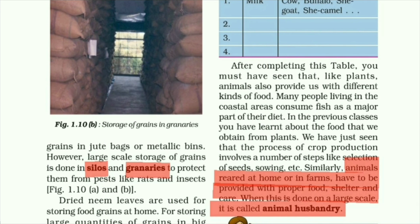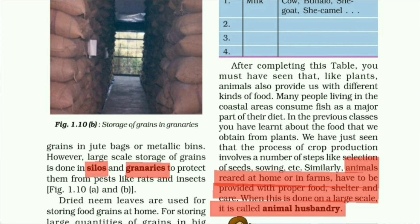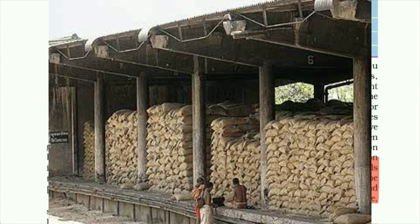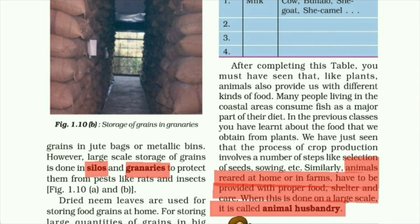However, large-scale storage of grains is done in silos and granaries. These are large godown-type structures where grains are kept in bulk, to protect them from pests like rats and insects.